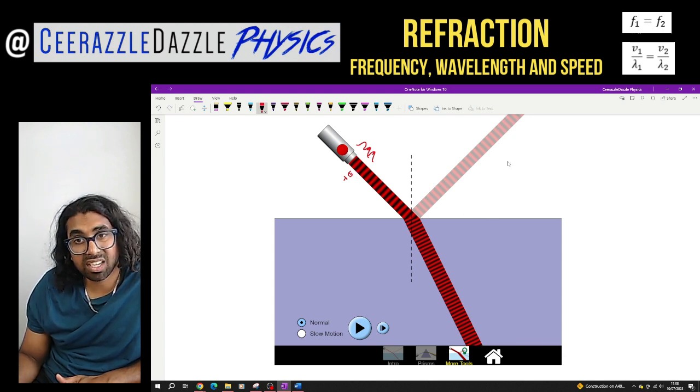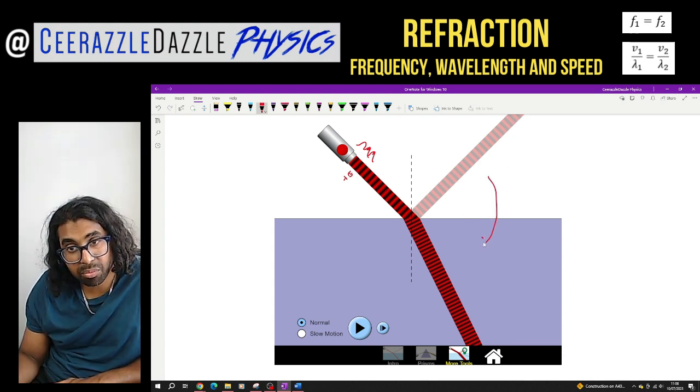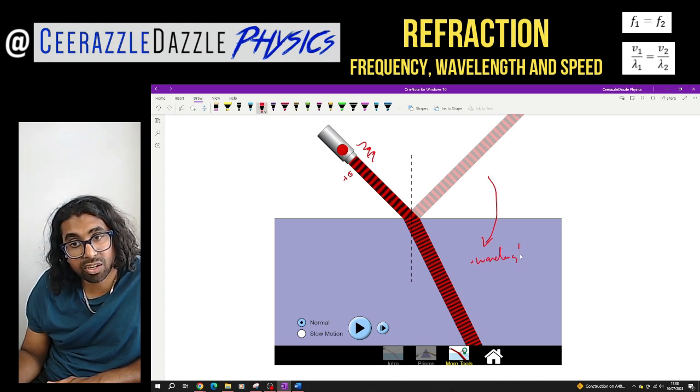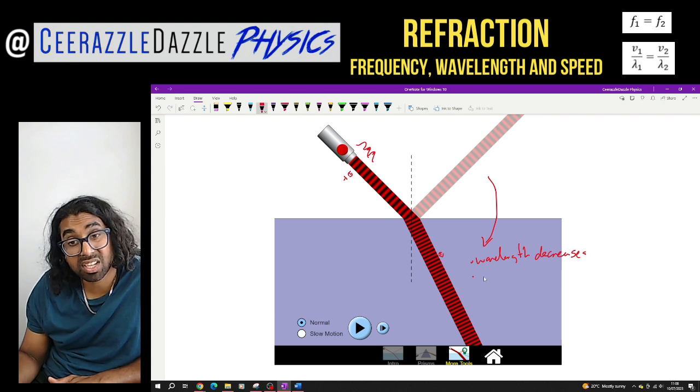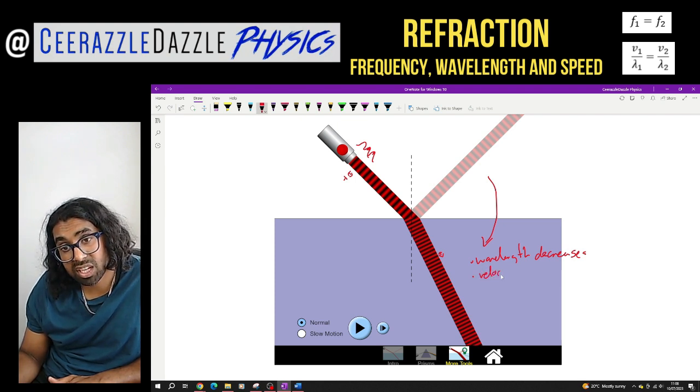We can clearly see that as we go from there to there, we can see that the wavelength decreases. Because look, this distance between there to there is now shorter. So the wavelength decreases over here. So we know that the wavelength decreases. And we also know that from before, we're going from less dense to more dense, that the velocity or speed is going to decrease as well.